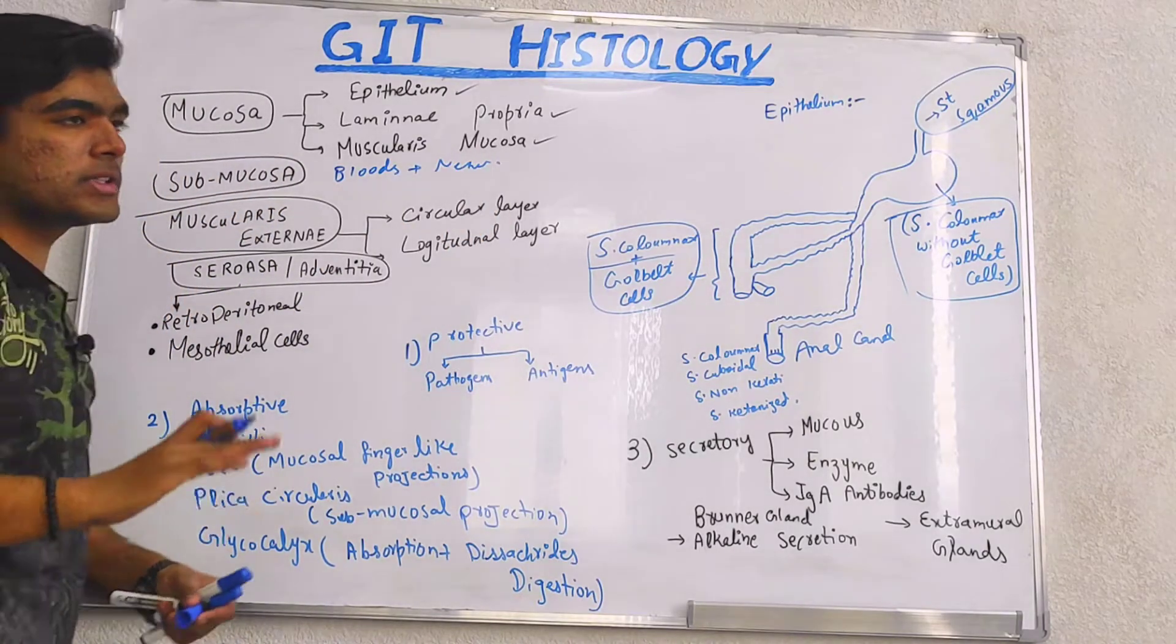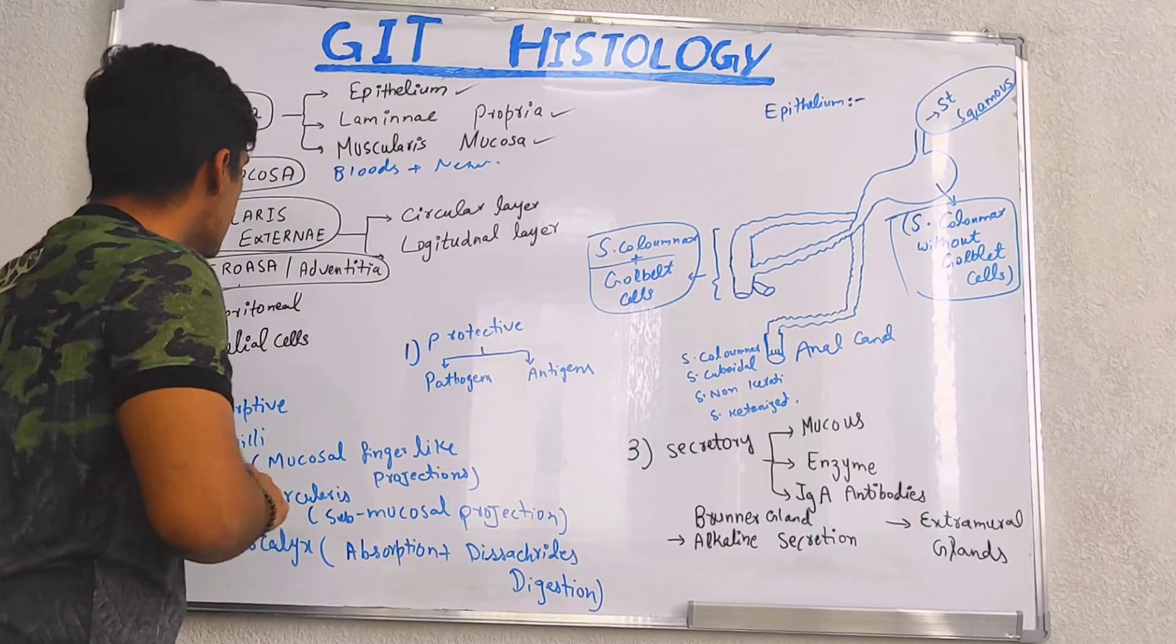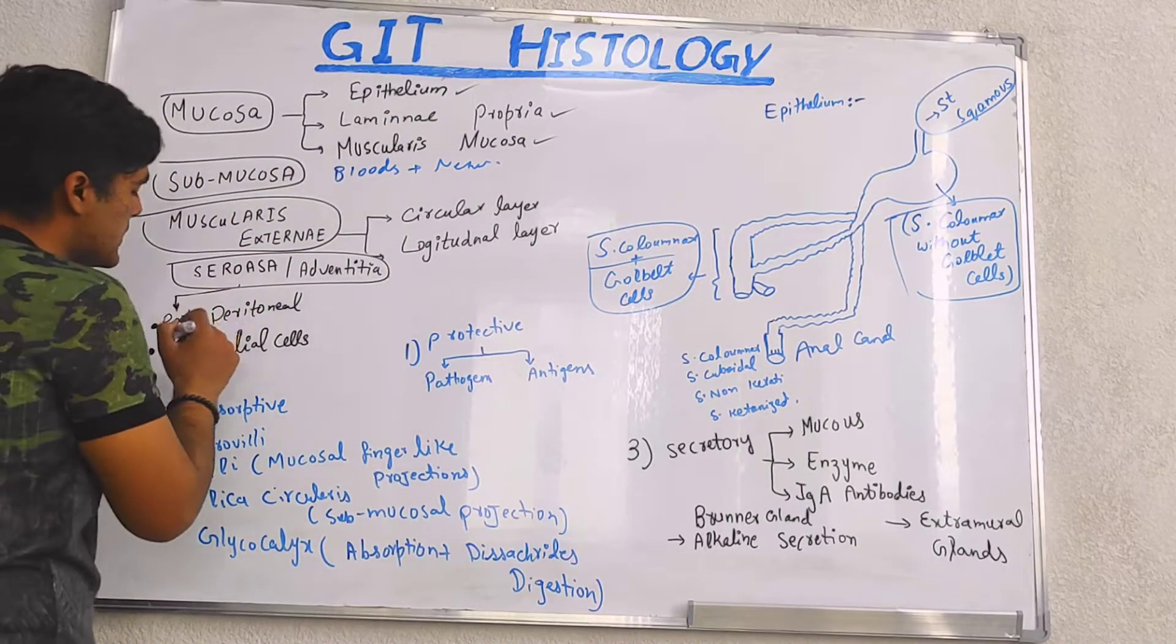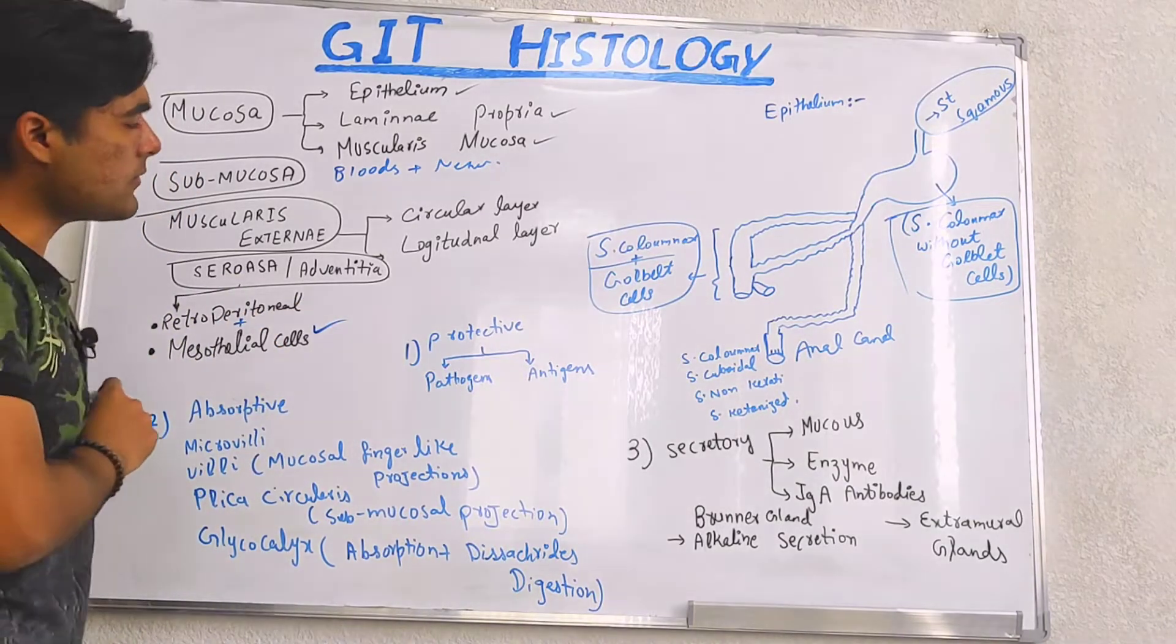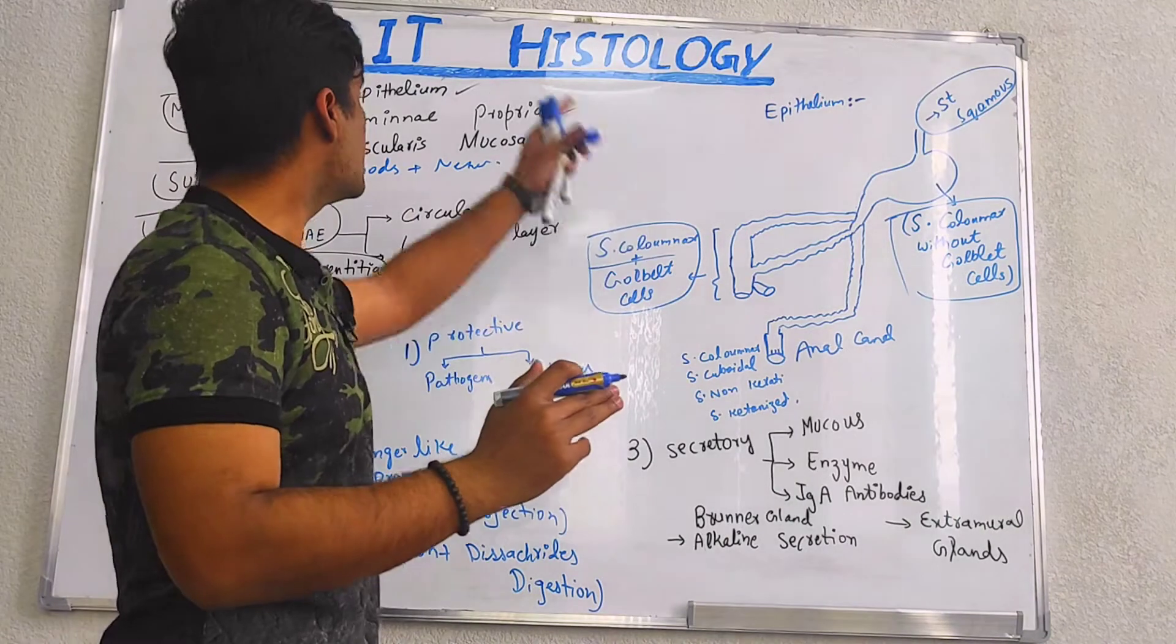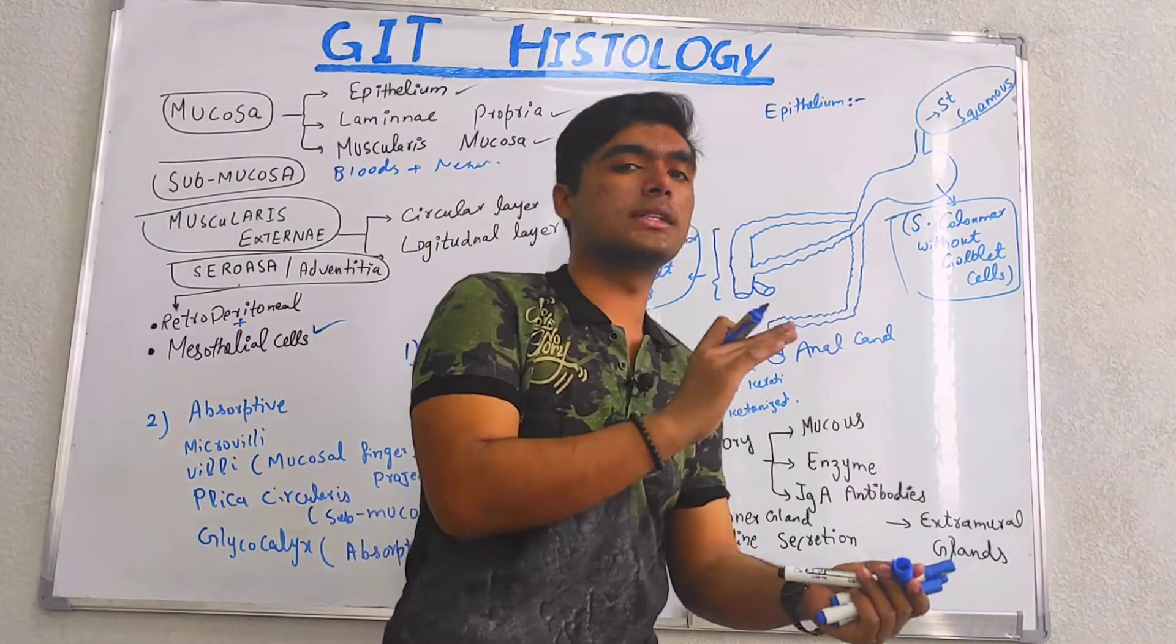And muscularis externa is further divided into two layers: outer circular and inner longitudinal layer. And serosa or adventitia, it contains mesothelial cells and is retroperitoneal. Now, talking about this very first layer of mucosa, the epithelium and its role in GI tract.